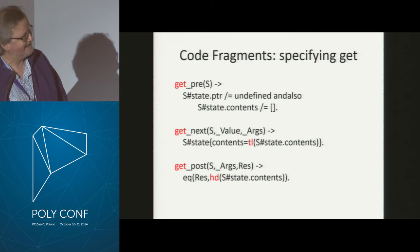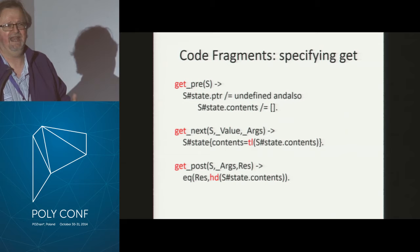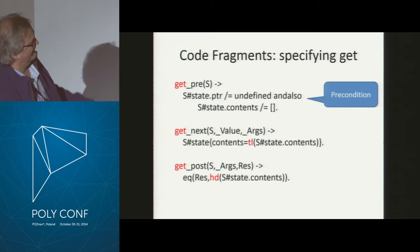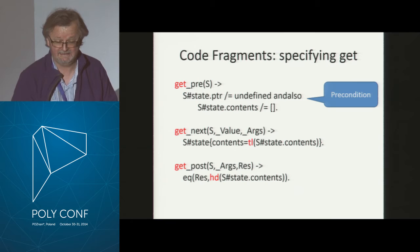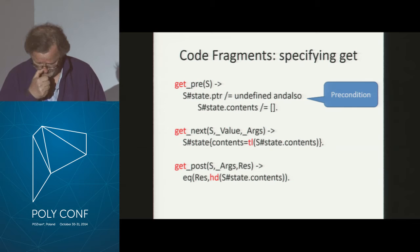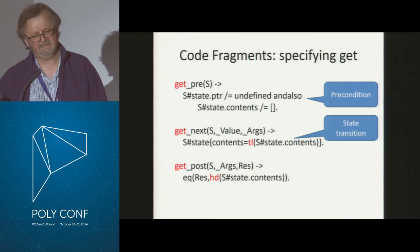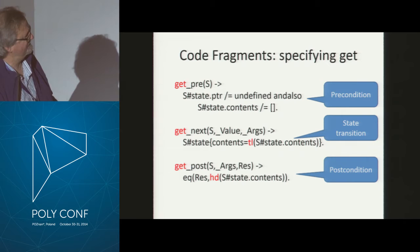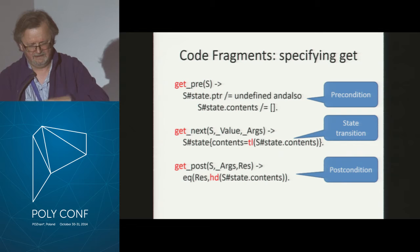The post-conditions just check that get always returns the first value from the list of values that ought to be there. I've got some code fragments here. This is the specification of get. The precondition says the pointer must not be undefined — you've got to call new before get — and the contents must not be empty. The effect of get replaces the contents with the tail of the list, discarding the first element. And the post-condition just says the result that get returns must be the first element of the list. The code is short and simple.